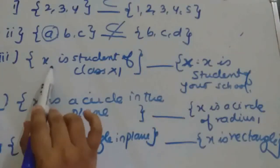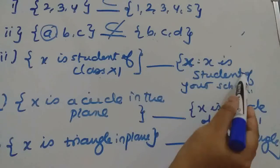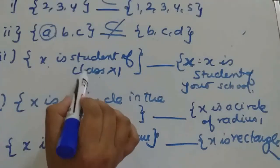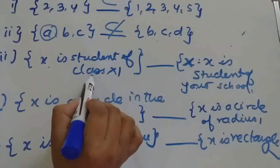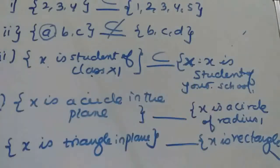Next example: X is student of class 11, where X is student of your school. If a particular student is in class 11, so that student will be in the school also. That means this is a subset.